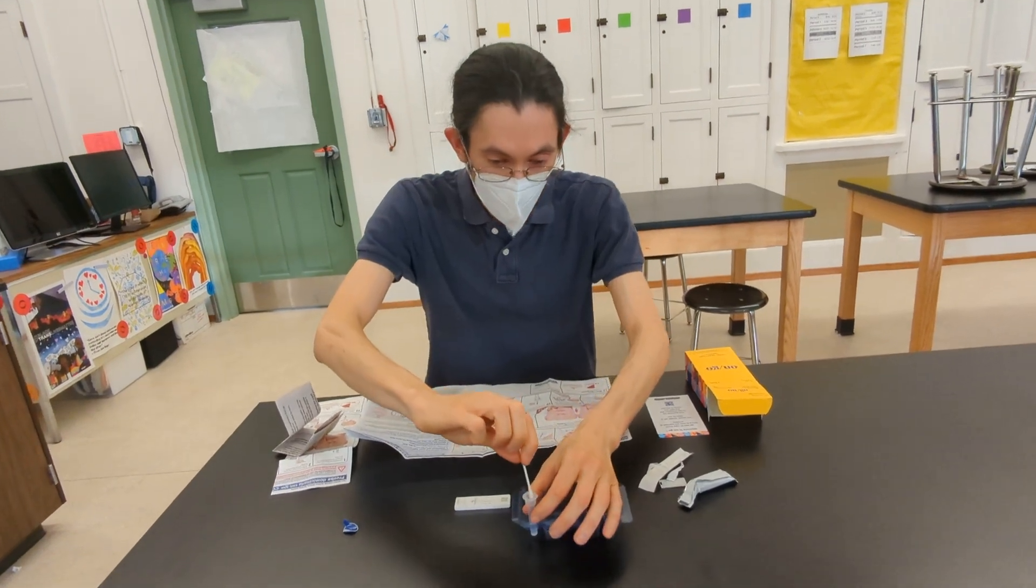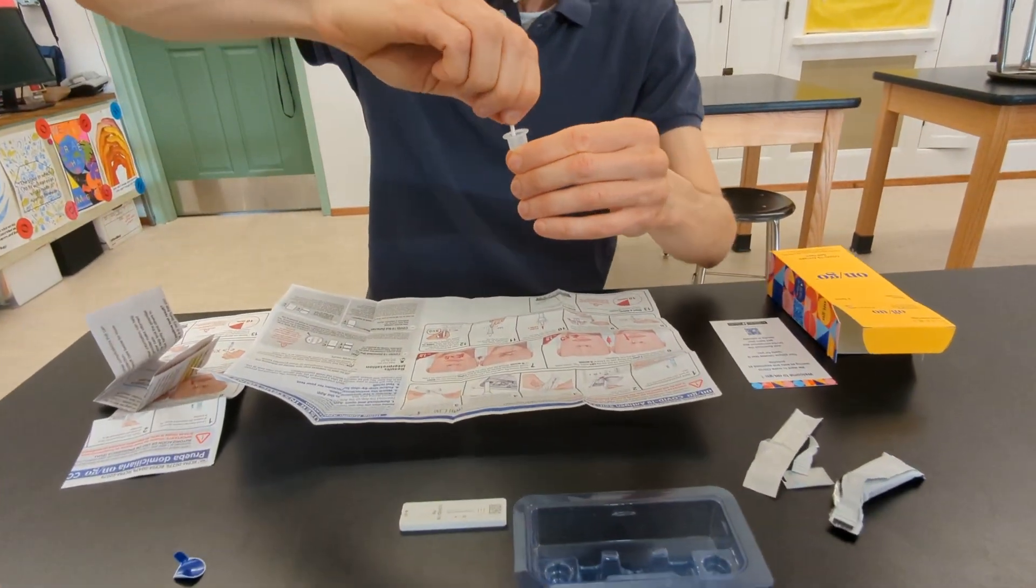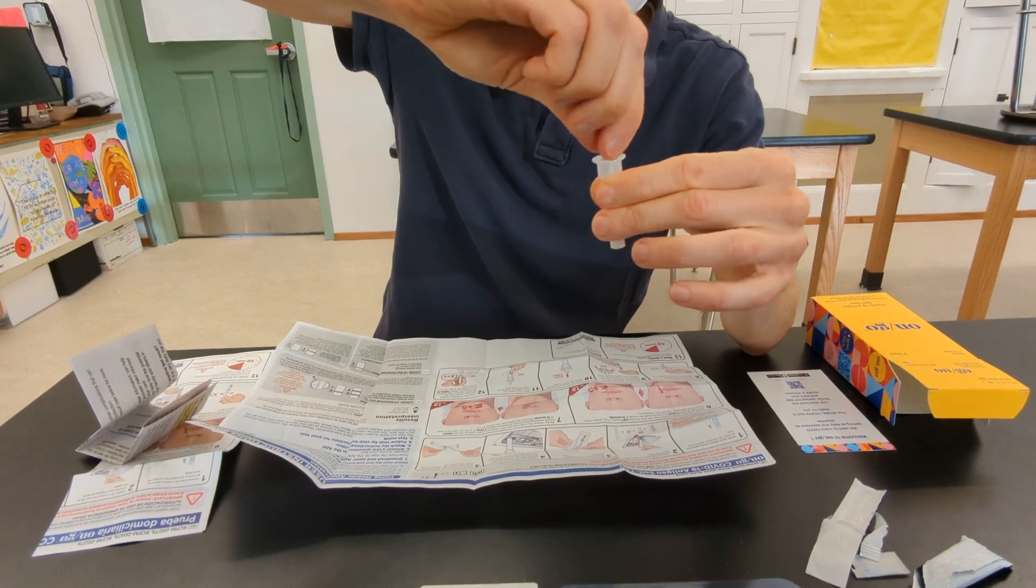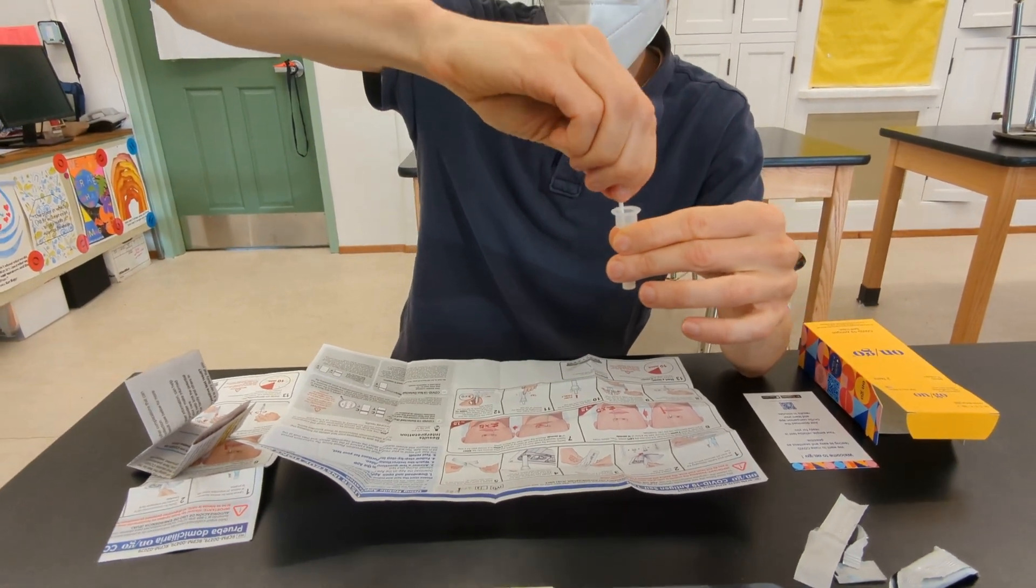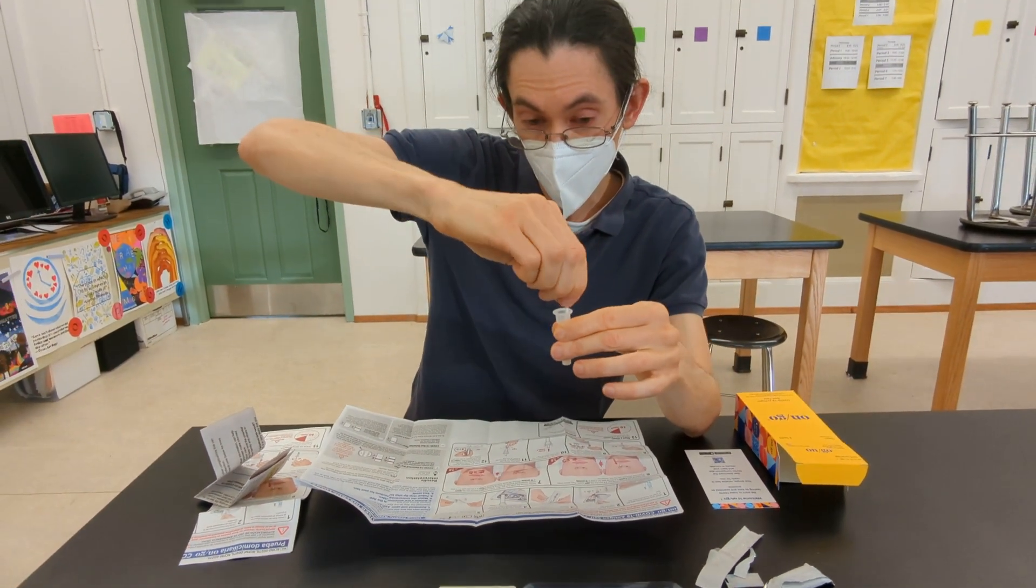You're going to place the swab in the extraction vial and swirl it around about five times vigorously. You're trying to get the materials from your swab into the liquid.